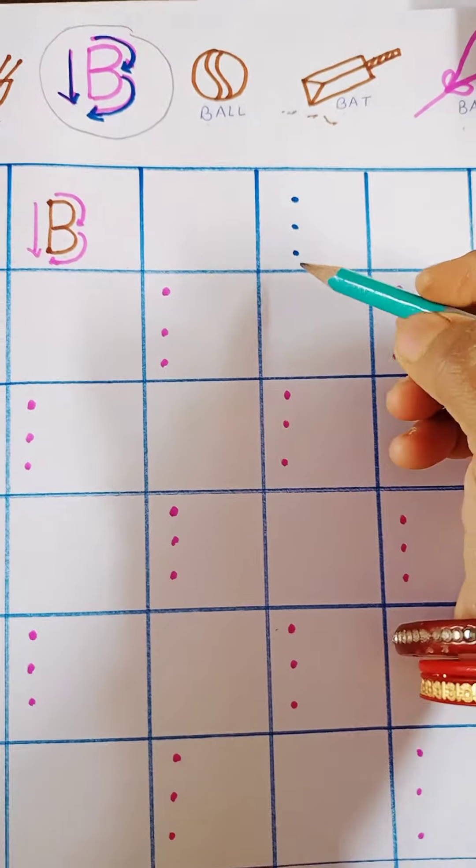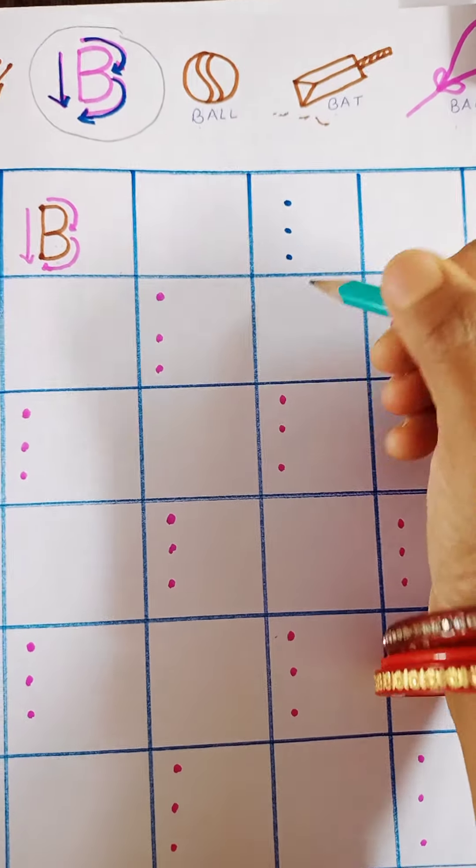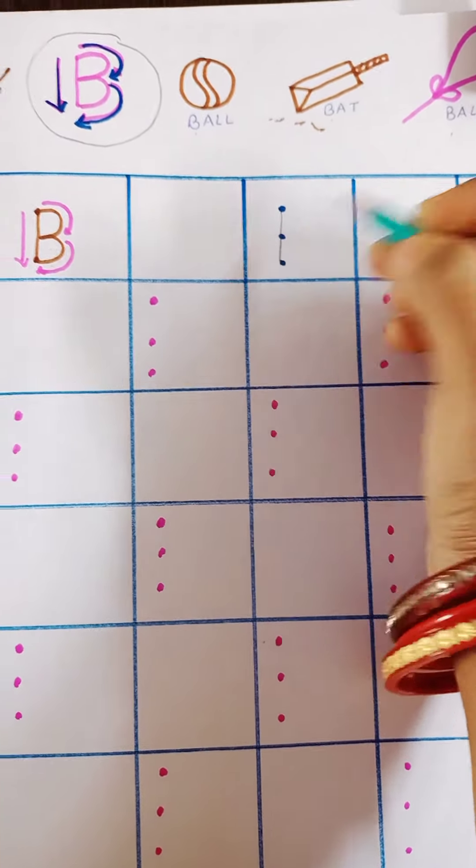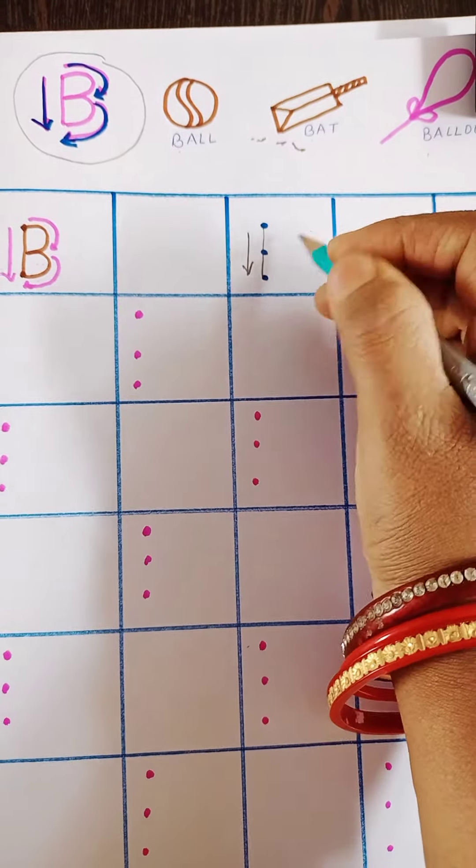Now I have given you three dots. By the help of these dots you will write B. Firstly, what we will do? We will join these dots with straight line in this way. In this way, we will join these dots.